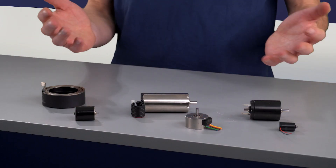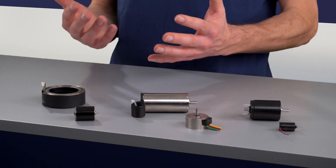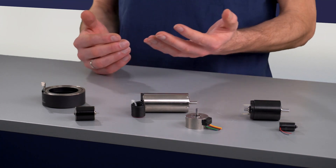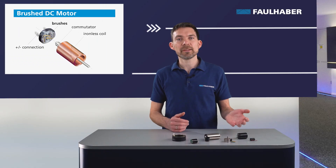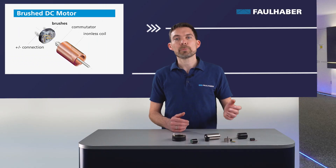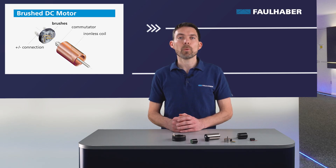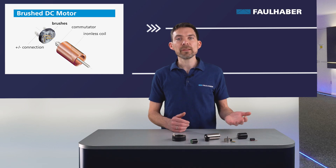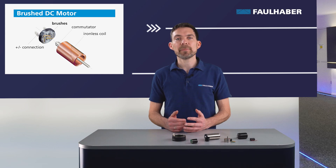All Faulhaber motors are designed to work in miniature drive applications — lightweight drives with high efficiency. The main feature of the Faulhaber DC motors are the precious metal or copper graphite brushes and the ironless self-supporting copper winding. Thanks to this design, the motor comes with extremely low rotor inertia, a unique dynamic behavior, and no detent torque.